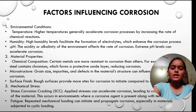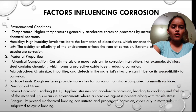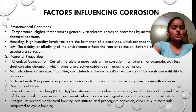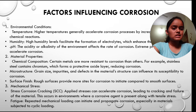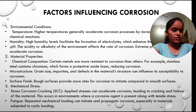Material properties. Chemical composition: certain metals are more resistant to corrosion than others. For example, stainless steel contains chromium which forms a protective oxide layer, reducing corrosion. Microstructure: grain size, impurities and defects in the material structure can influence its susceptibility to corrosion. Surface finish: rough surfaces provide more sites for corrosion to initiate compared to smooth surfaces.